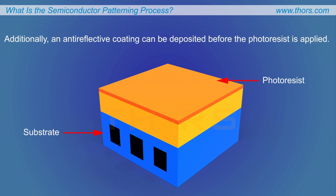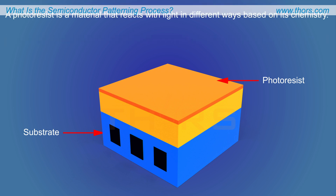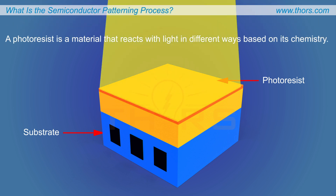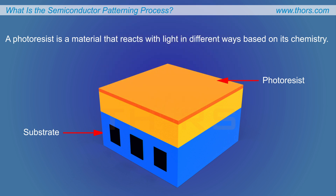Additionally, an anti-reflective coating can be deposited before the photoresist is applied. A photoresist is a material that reacts with light in different ways based on its chemistry.